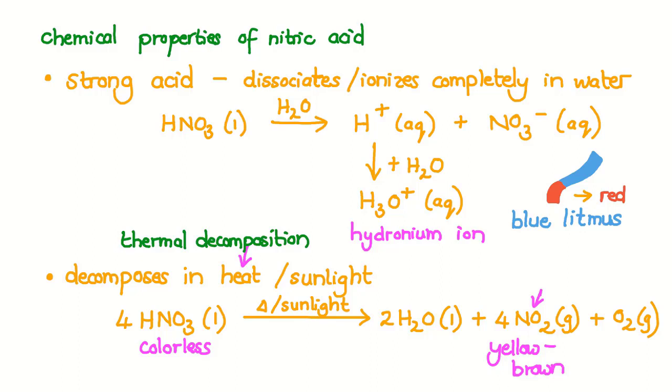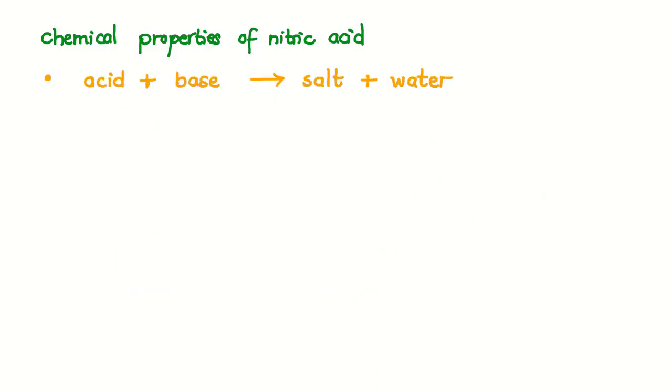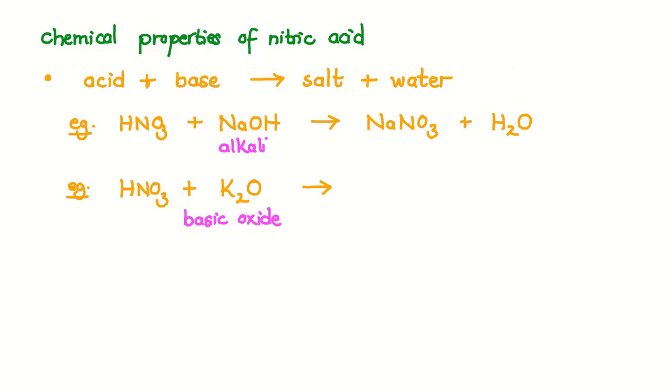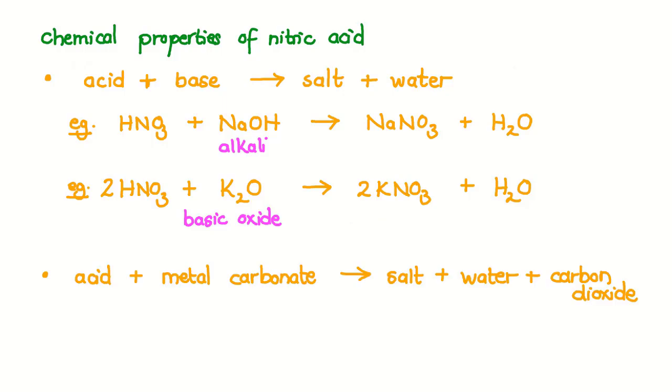Now because nitric acid is an acid, it can react with a base. The general equation of the reaction between an acid and a base is acid plus base gives salt plus water. In the case of nitric acid, it can react with a base, specifically an alkali base, for example sodium hydroxide, to produce the salt sodium nitrate and water. Nitric acid can also react with a base that is a metal oxide or a basic oxide, for example potassium oxide, producing the salt potassium nitrate and water. Many acids, including nitric acid, can react with a metal carbonate to produce salt, water and carbon dioxide. Here is an example of this reaction using nitric acid and calcium carbonate. The salt product is calcium nitrate and carbon dioxide is given off as a gas.